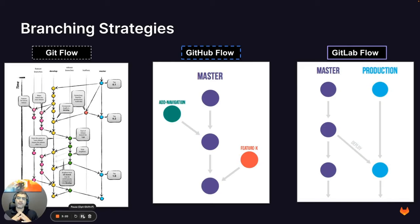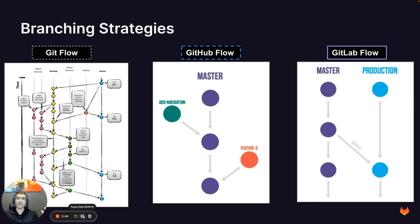So what do we mean by branching strategies? A branching strategy is basically a set of rules and conventions teams follow when they create and manage branches in a Git repository. These conventions were created to help teams collaborate and work together throughout the software development life cycle. Today the three most common branching strategies in the market are Git Flow, GitHub Flow, and GitLab Flow. Let's look at the key differences and when to use what.